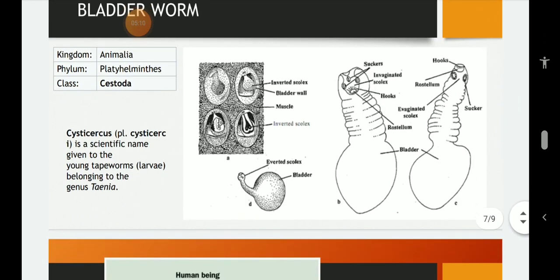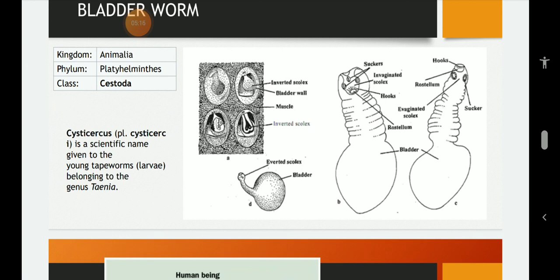The last one is the bladder worm belonging to phylum Platyhelminthes and class Cestoda and it is also called as cysticercus or it is a scientific name for the tapeworm larvae and the tapeworm is scientifically called as Taenia solium. The bladder worm is the larval stage of tapeworm found in the intermediate host that is the pig. It is known as cysticercus and